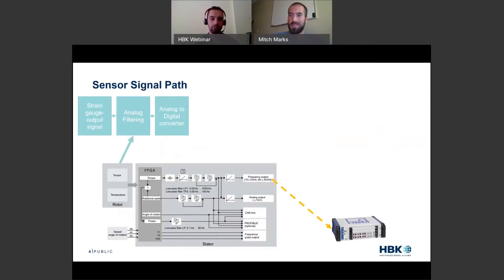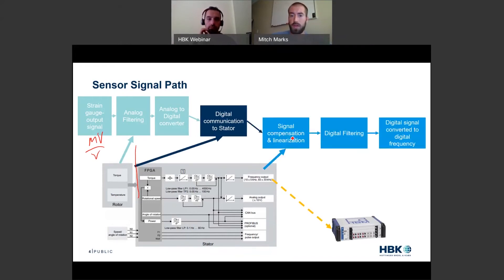So if we follow the signal path - and I made this slide for a customer a couple months ago and kind of liked it - on the rotor we have this void between rotor and stator. We have strain gauge output signal, the millivolt per volt signal. We have some analog filtering, analog digital conversion, and then we pass that through an air gap. Digital communication, actually at a high frequency, to the stator.